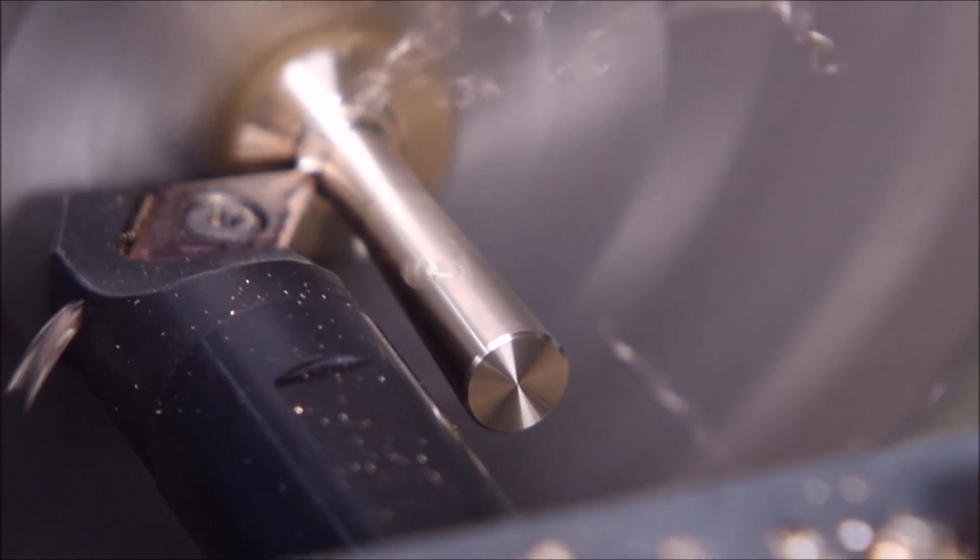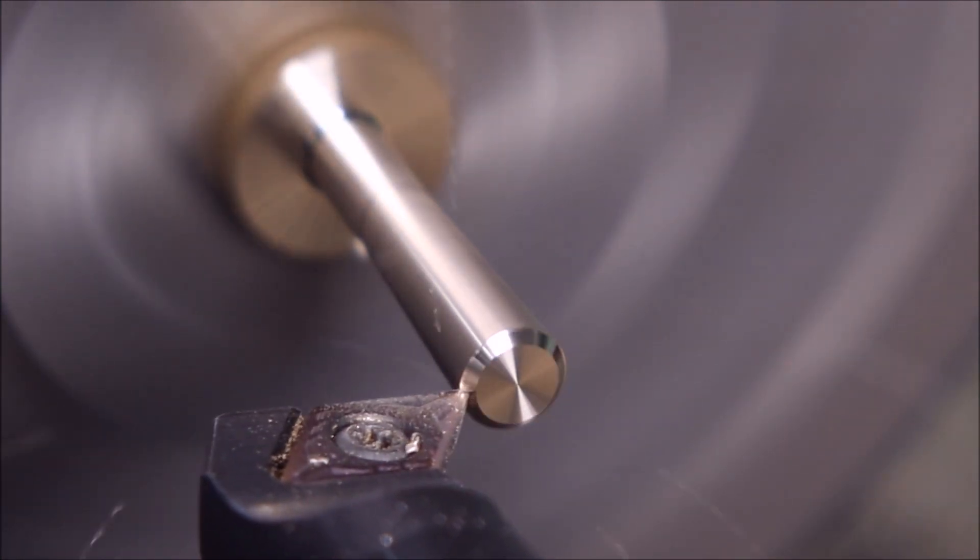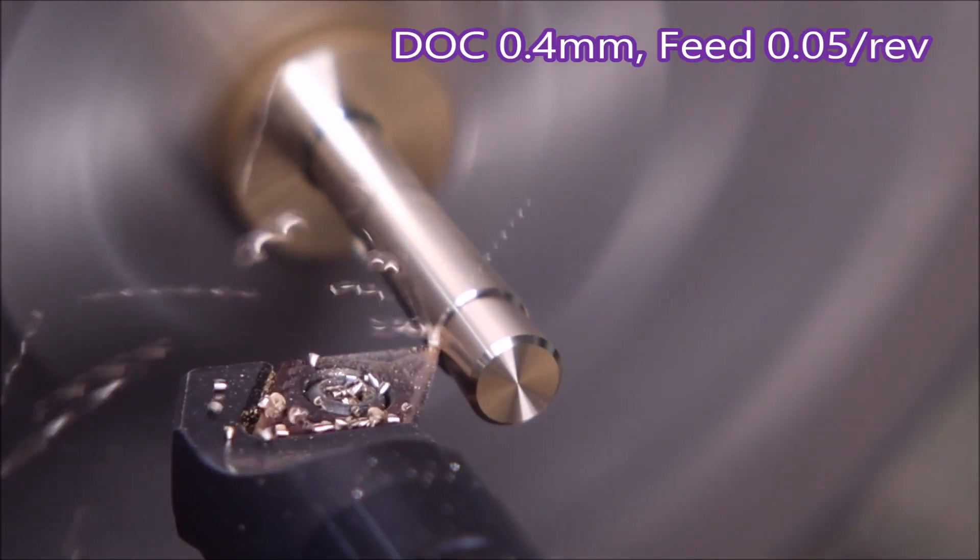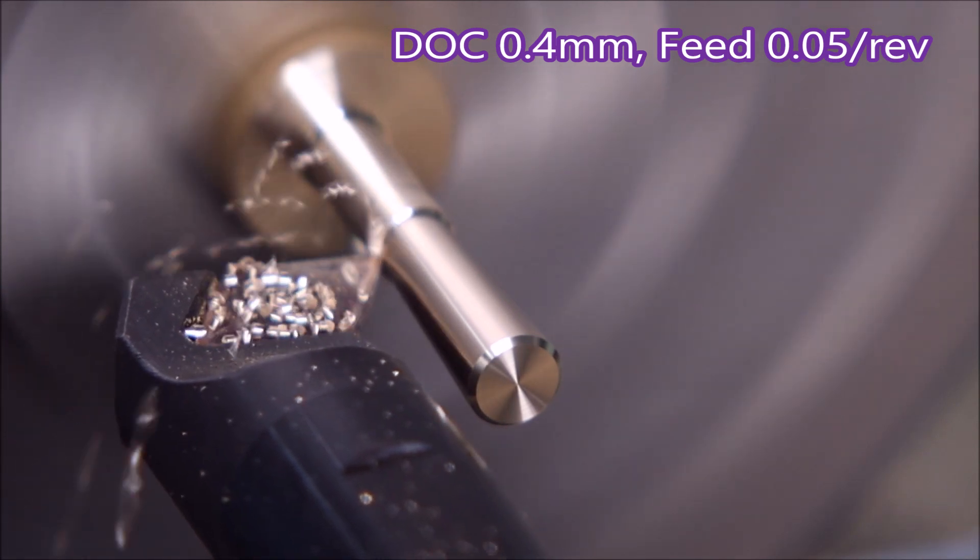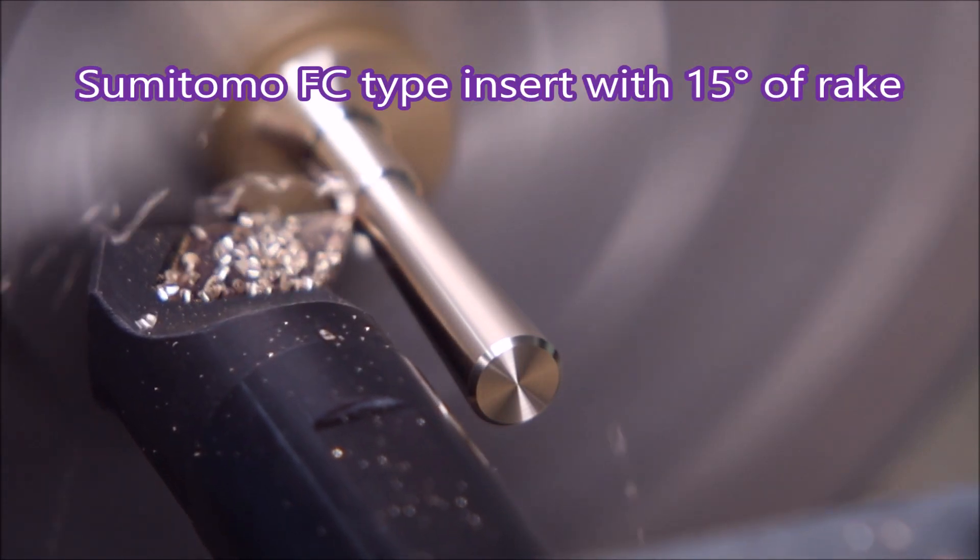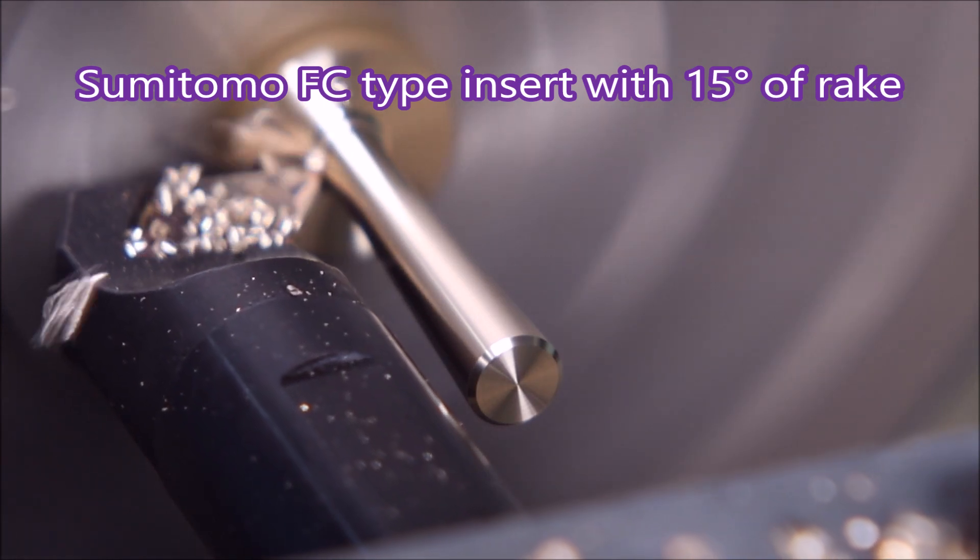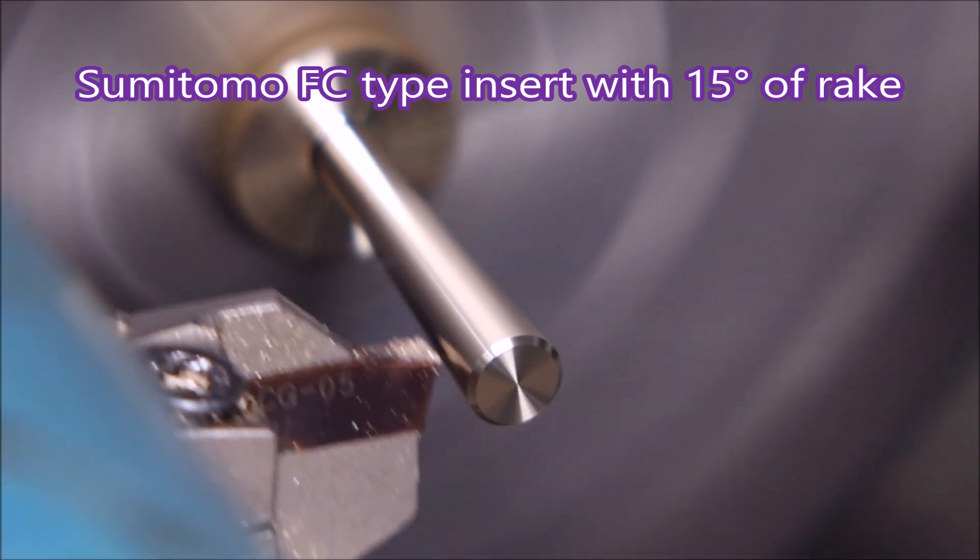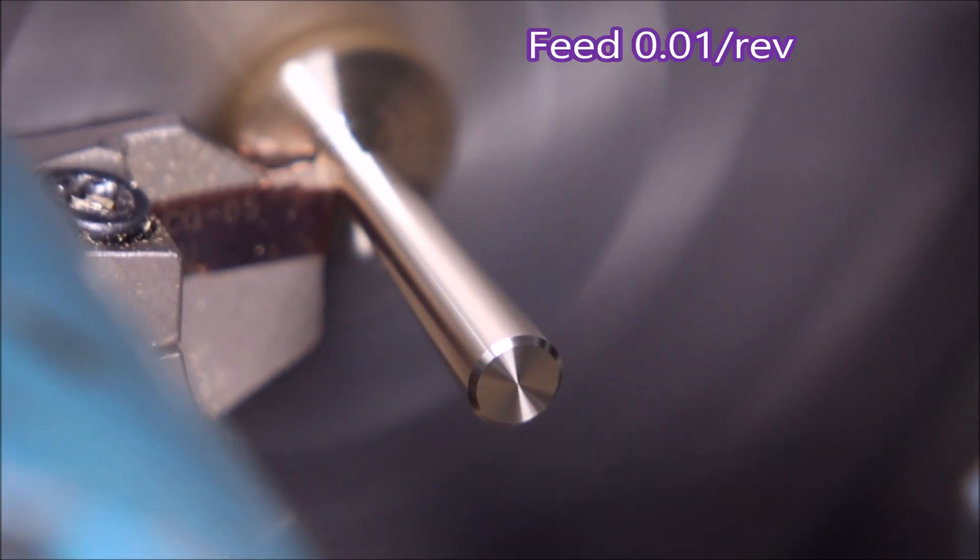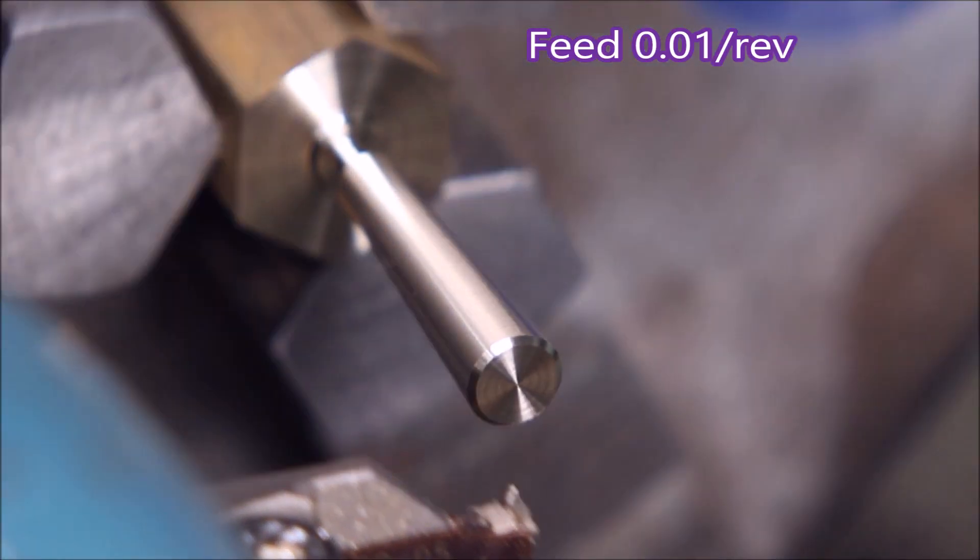And then the finish cut. This is feeding at 0.1 per rev, except for this finish cut here where it's 0.05, using a Sumitomo FC type insert with 15 degrees of rake. And this is the right-handed insert at work, and there's the part.